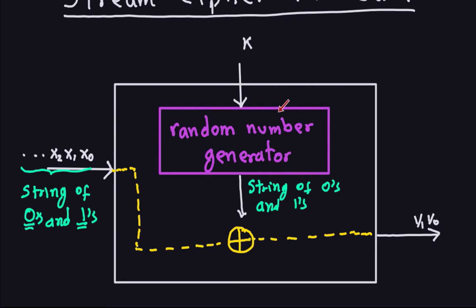Now, to implement this in Java, we're going to mimic what a stream cipher does. The code we're going to write is not exactly how the stream cipher is implemented in real life — for example, in a cell phone it's different. What we're doing here has educational purposes; this is not exactly how it's implemented in practice.